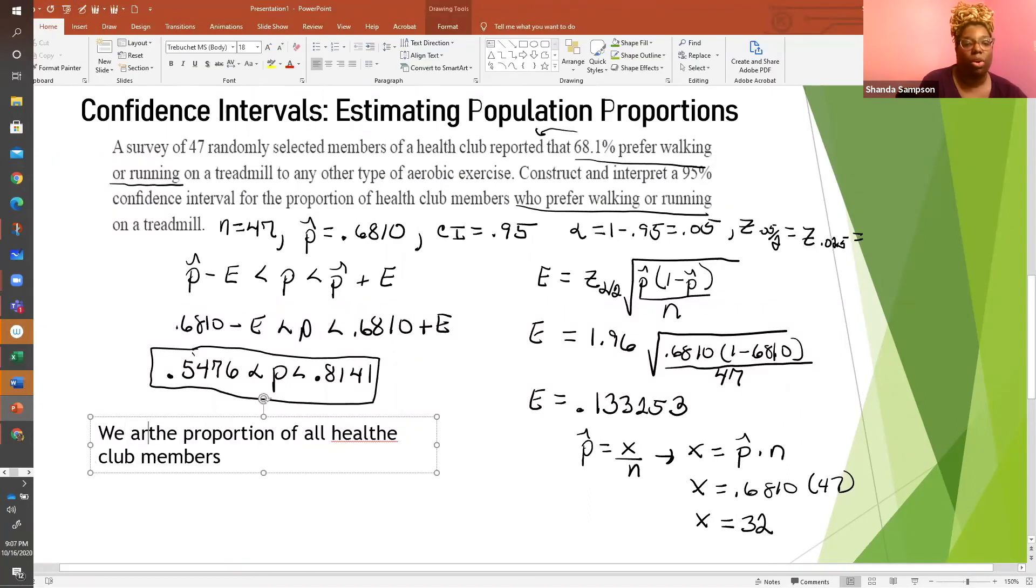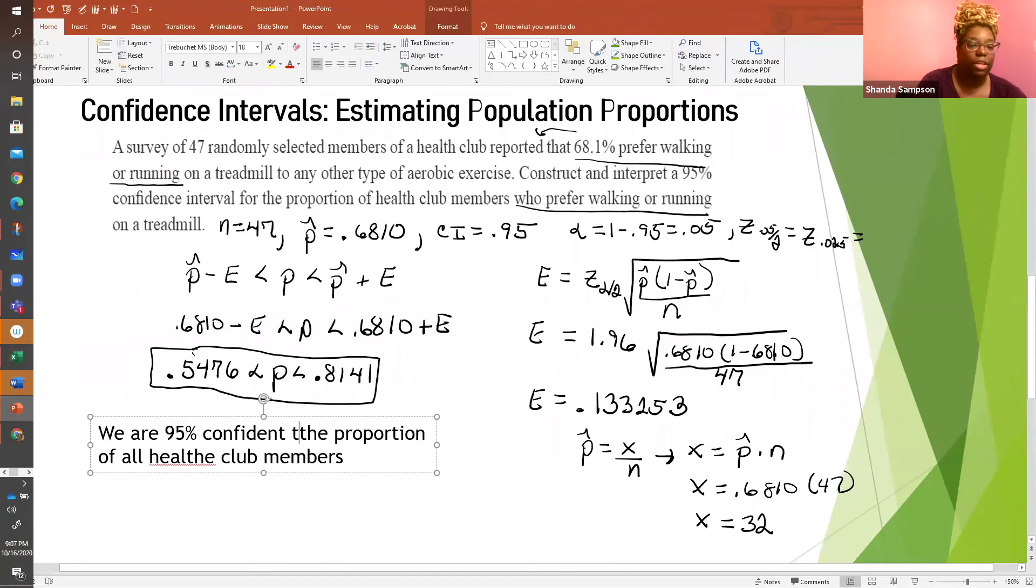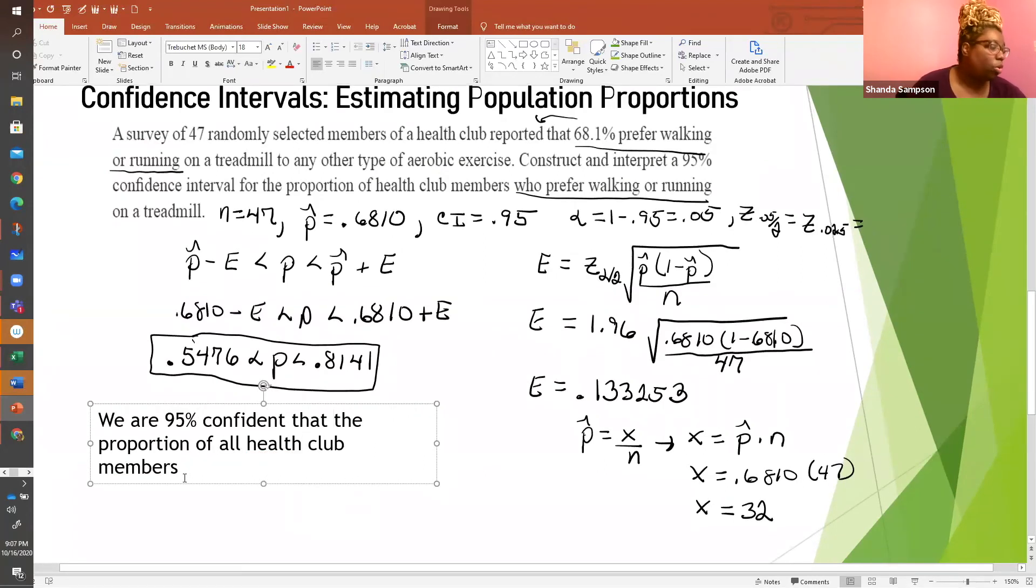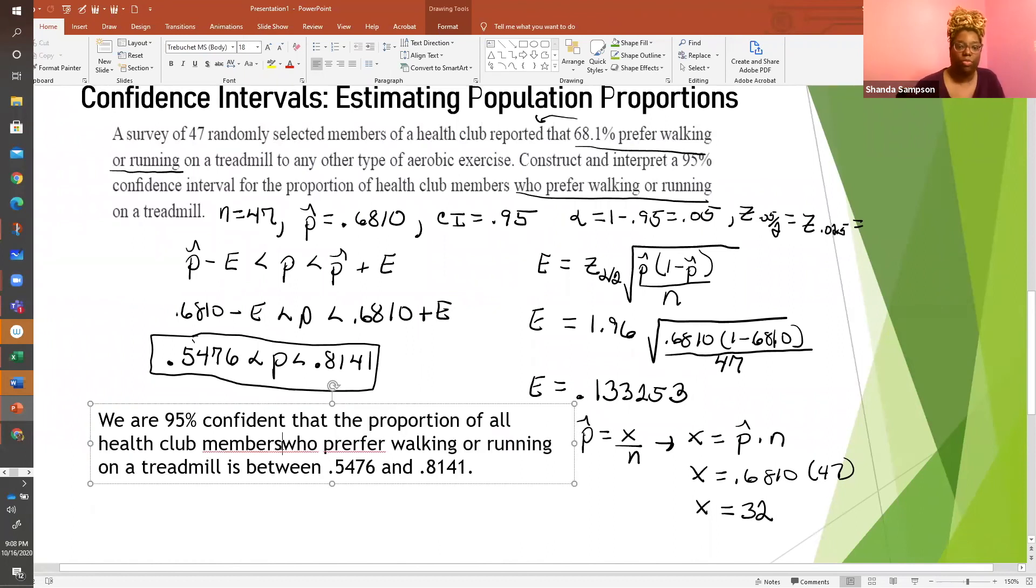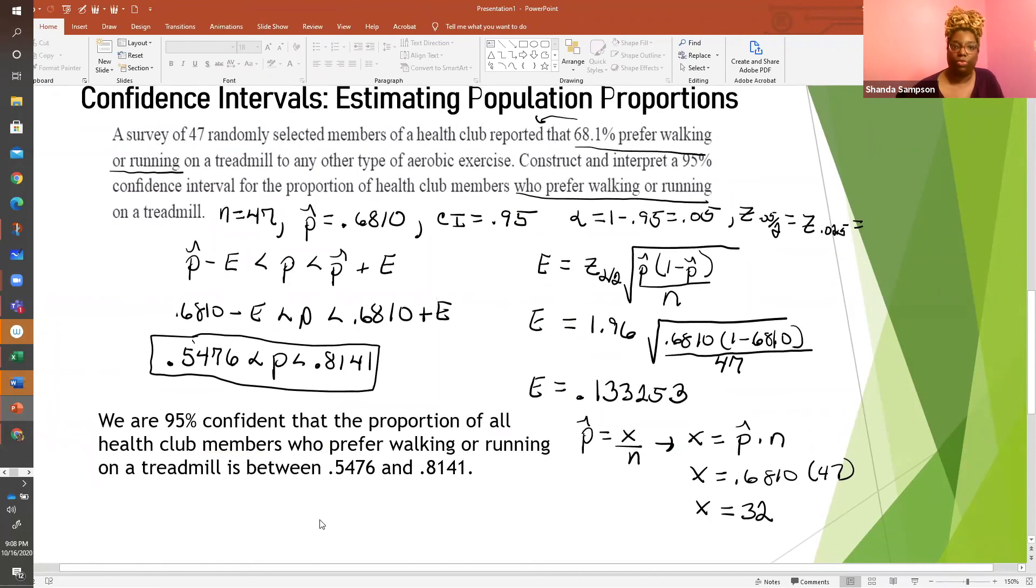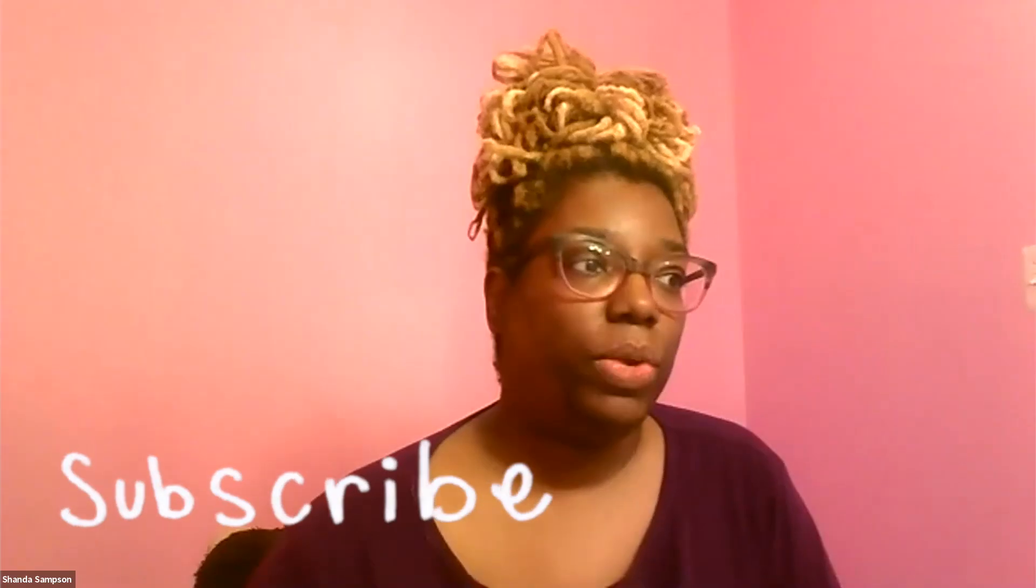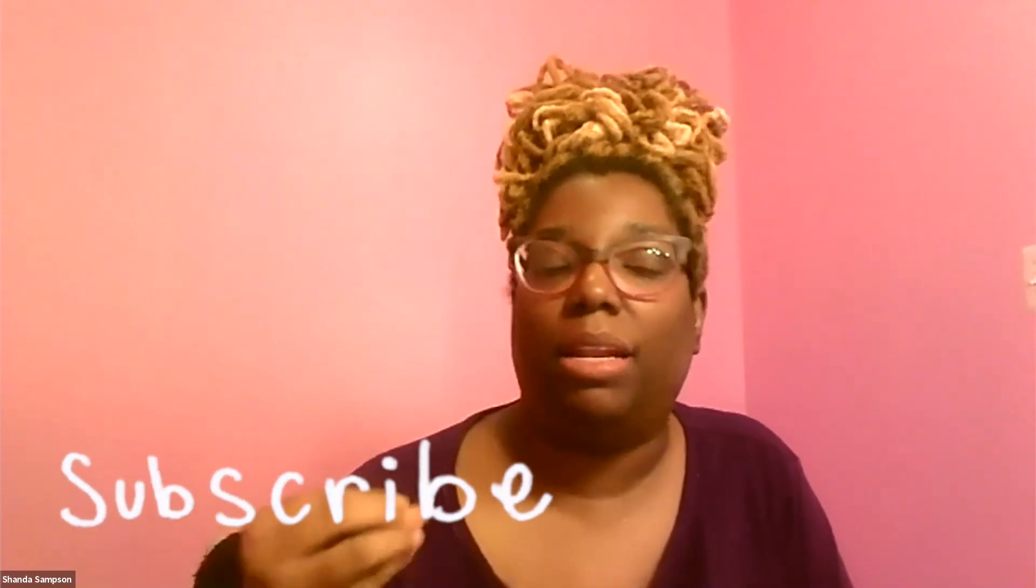So let's interpret it. We are 95% confident. Don't forget that part. That's the main part. Without that, it's incorrect. That the proportion of health club members who prefer walking or running on a treadmill is between 0.5476 and 0.8141. That's all you need for your interpretation. So that takes care of your answer. That's your full answer for this problem. So we just estimated the population proportion for some sample. And we also interpreted it. That's pretty simple. And that's all you need to do.